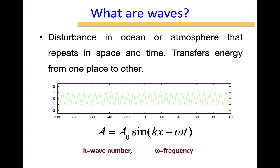When you talk about waves, two things become important. One is the wave number, which is how many wave packets are traveling in a given space, and the other is the frequency — how frequently they repeat in space and time. That is why the spatio-temporal nature of waves is very important.